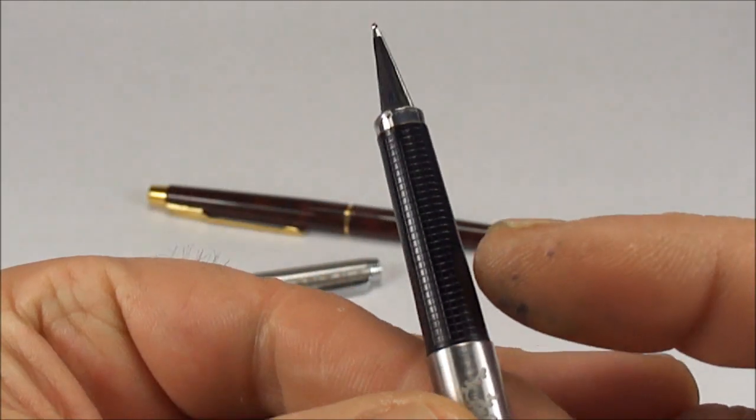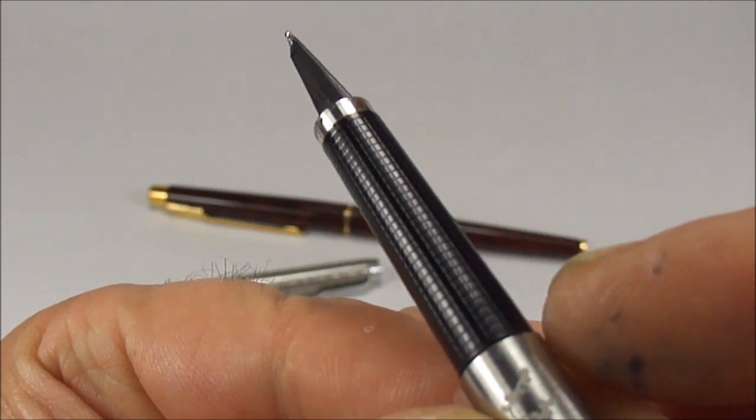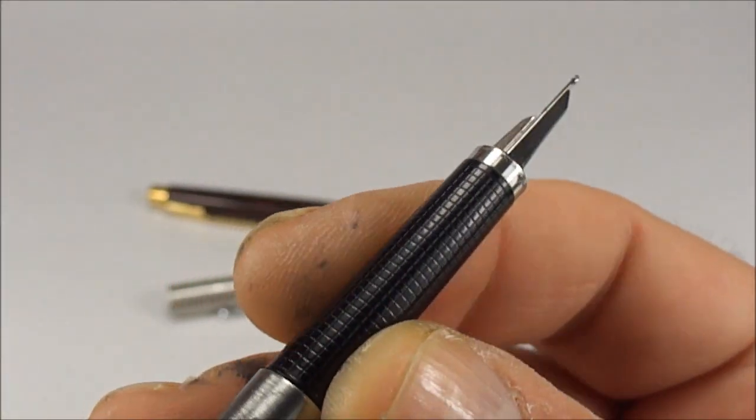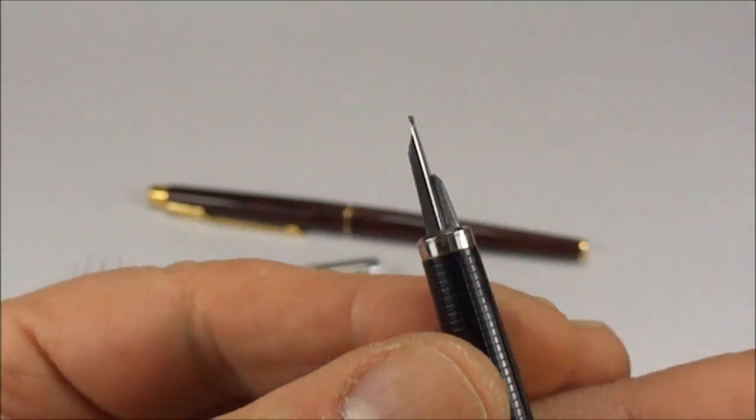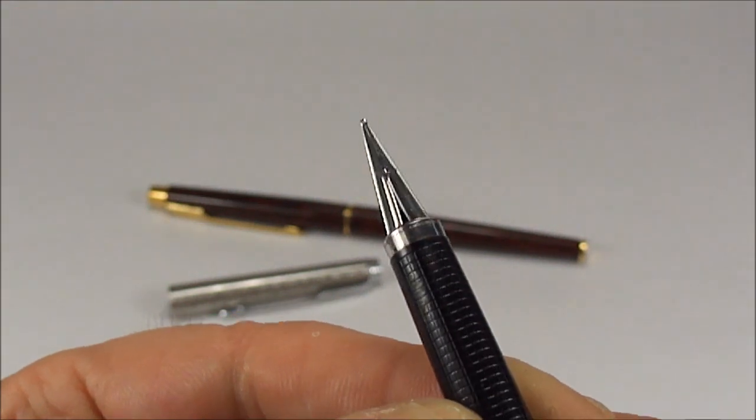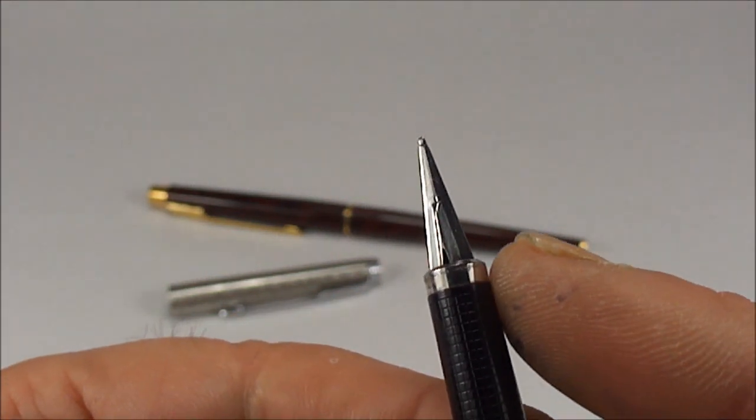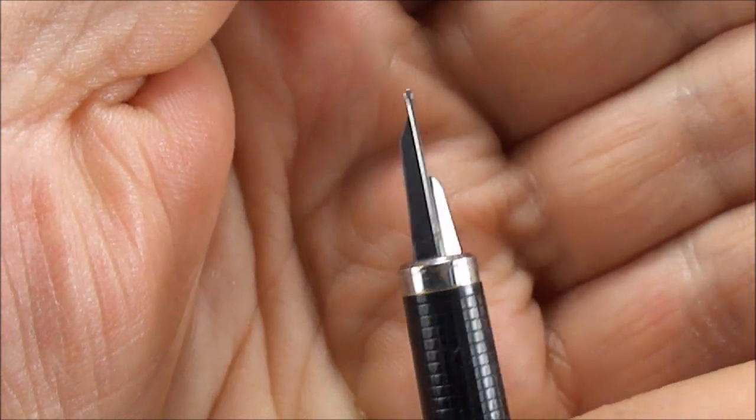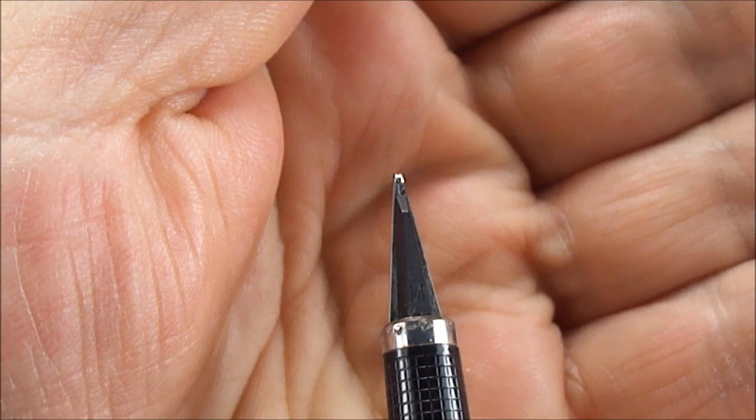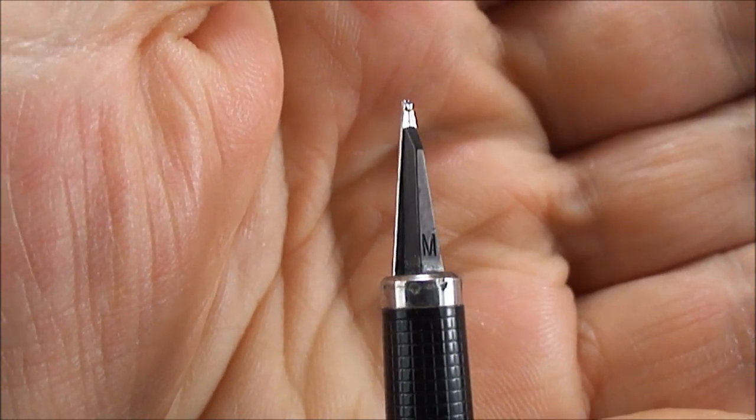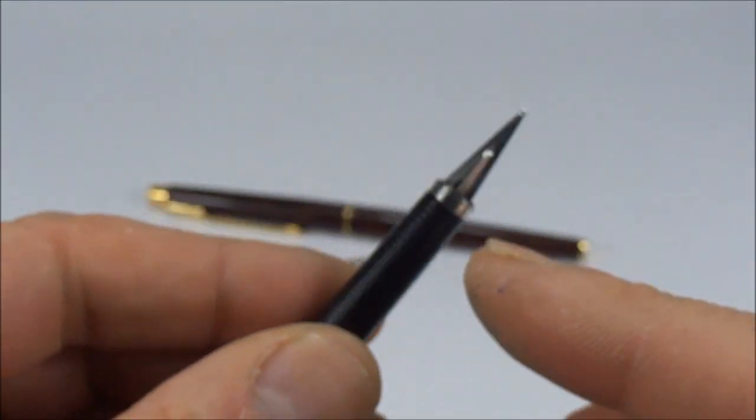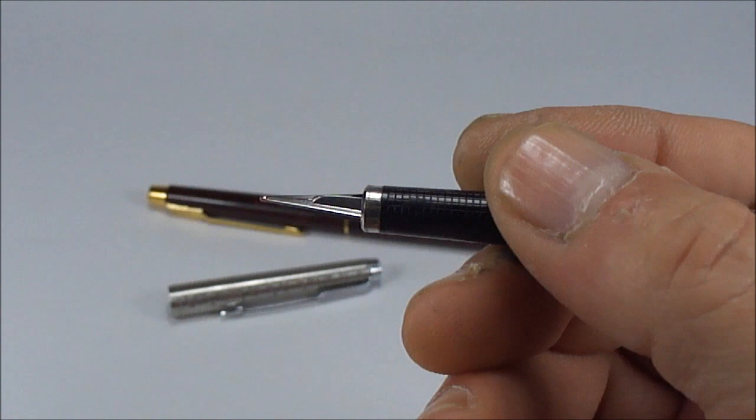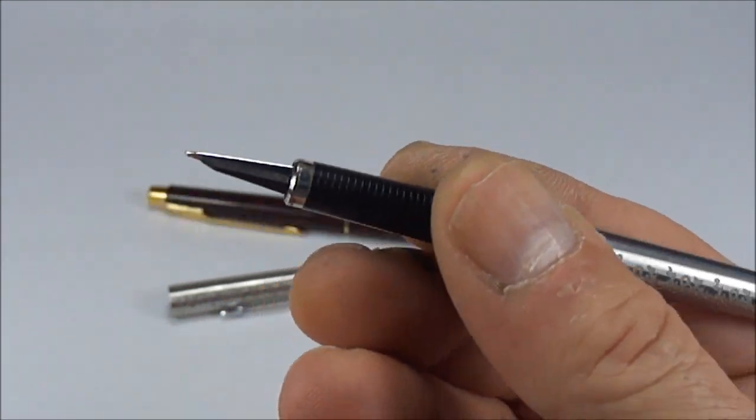The first thing you'll notice is this triangular nib with a metal piece to give it rigidity. If I turn it over, you can see the feed underneath with M for medium. The beauty of this pen was that you could write on both sides of one nib. That's where the model number 180 came from - you turn the pen 180 degrees to write on the other side.